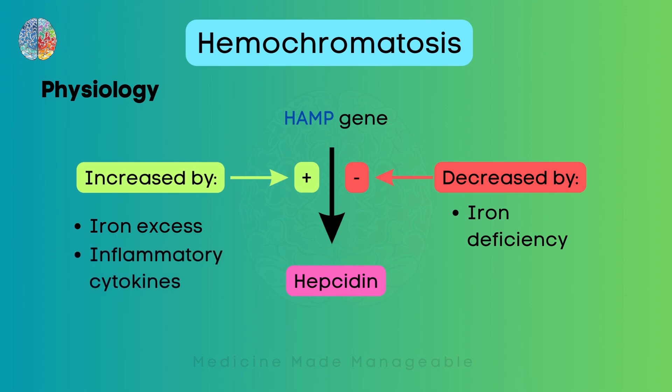Hepcidin is also increased by inflammatory cytokines or in any inflammatory state. It is decreased in hypoxia because the body needs more oxygen transport during hypoxic states, which is done by RBCs, and RBCs require iron — so hepcidin decreases so that more iron can enter the bloodstream. We saw that mutations in the HFE gene and HJV gene lead to decreased hepcidin levels, which leads to increased iron uptake, which leads to hemochromatosis.